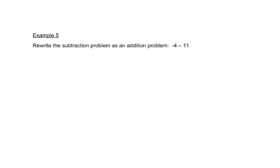This problem wants us to write it as an addition problem. The first number just gets copied, and then the subtraction sign actually means the opposite of — so it changes subtraction to addition. Then this eleven gets made its opposite, which is negative eleven. So negative four minus eleven is the same thing as negative four plus a negative eleven, and that allows us to use the rules for addition.